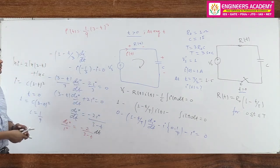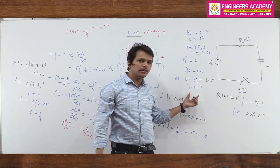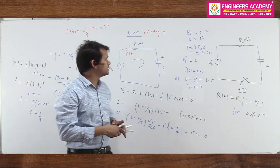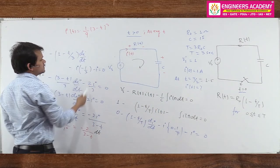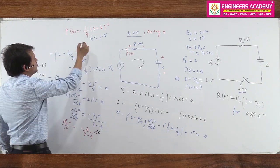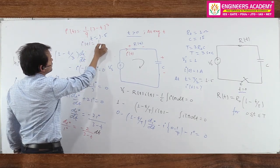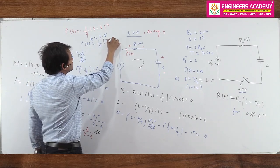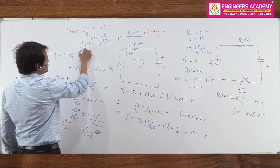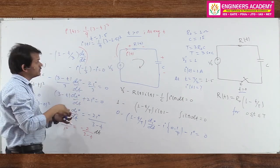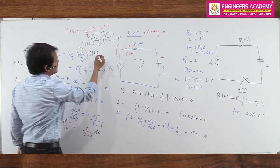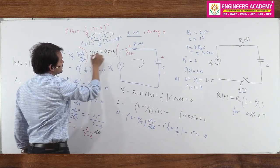Now we need the current at t = T/2. Since T = 3 seconds, T/2 = 1.5 seconds. Substituting t = 1.5 into i(t) = (1/9)·(3 - t)²: i(1.5) = (1/9)·(3 - 1.5)² = (1/9)·(1.5)² = (1/9)·2.25 = 0.25 ampere. So the answer is 0.25 A.